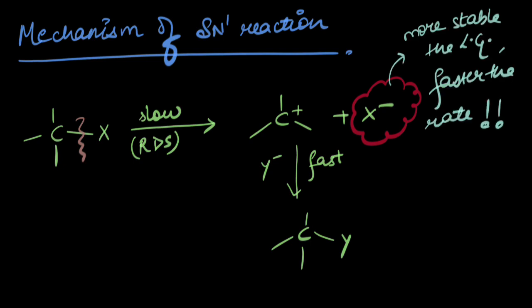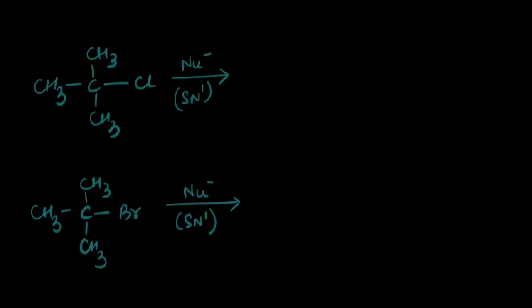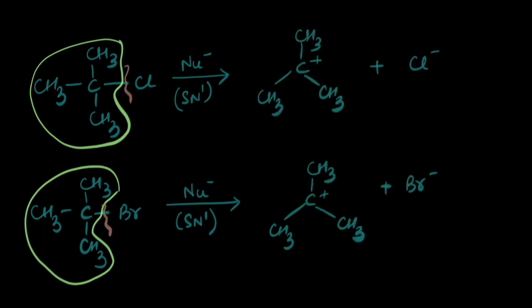More stable the leaving group, faster is the rate. Let's take an example to dig a little deeper. So let's compare the reactivity of these two substrates undergoing nucleophilic substitution via SN1 mechanism. In both the cases, this part is the same, right? When the bond breaks, we get the same carbocation in either case.